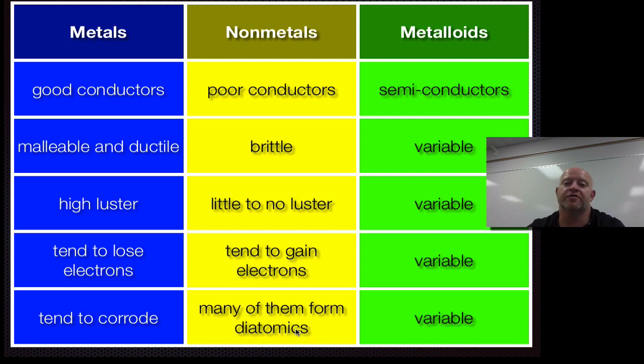This will be a good distinction for us later on in the year because we talk a lot about what metals do in terms of bonding versus what non-metals do in terms of bonding. And then of course we kind of throw those metalloids in whenever they need to in that process. So that's another way for us to actually classify things in a periodic table is by metal, non-metal, and metalloid.